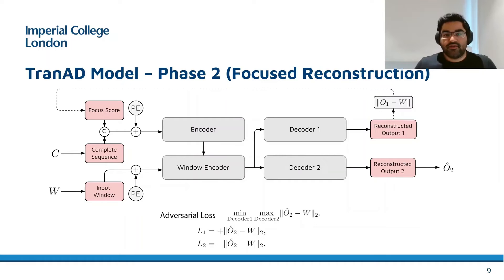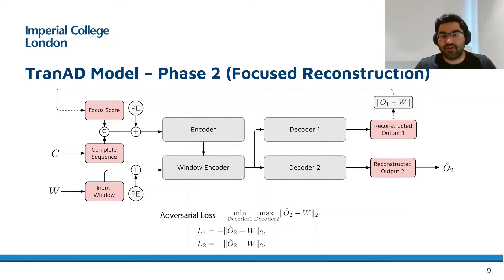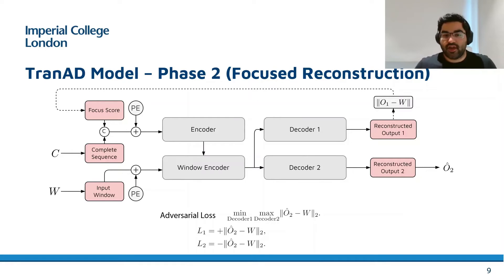In the second phase, we send the reconstruction loss of the first decoder back as a focus code to the first encoder, which was a zero vector in the first phase. This is shown by the dotted line at the top of the figure. We then follow the complete process again to generate O2-hat as the output of decoder 2.